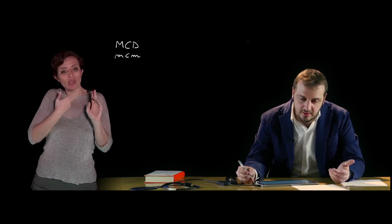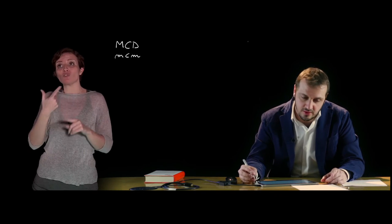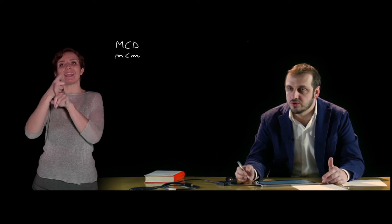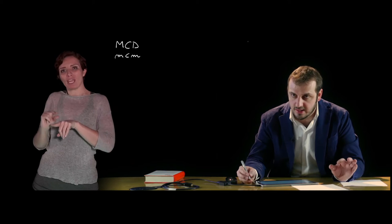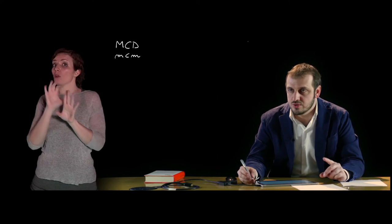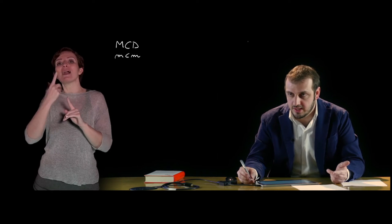Il minimo comune multiplo di due numeri è il più piccolo tra i multipli comuni e quindi è il prodotto di tutti i fattori — sia comuni che non comuni — ognuno preso una sola volta però con il massimo esponente.